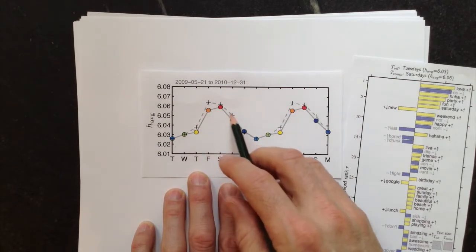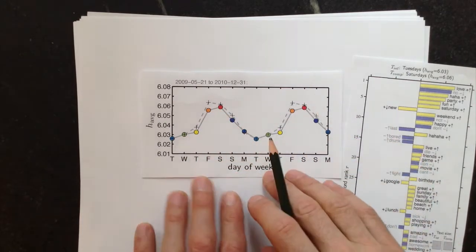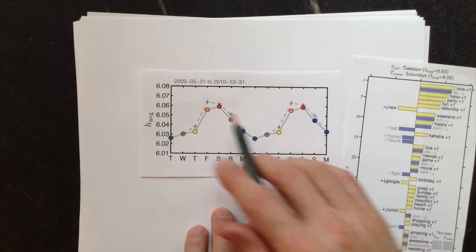Wednesday, Thursday, Friday, Saturday, Sunday, Monday, back to Tuesday, and we've just repeated the cycle. So Tuesday's in fact the lowest day, Saturday's the highest day.